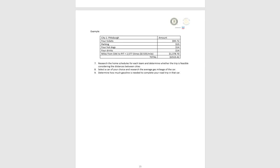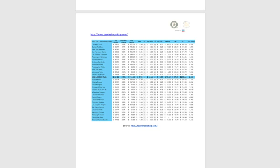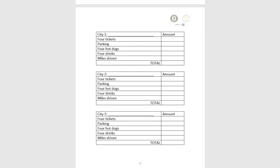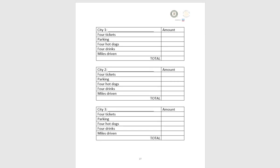Pittsburgh is given as an example city, with sample pricing for tickets, parking, and hot dogs provided. Typical pricing data is available in the table provided or online at teammarketing.com. The end result will be students' own plan for the road trip: identifying three cities, leaving from Oakland, arriving at City 1, then City 2, City 3, and then back to Oakland.